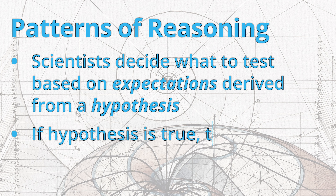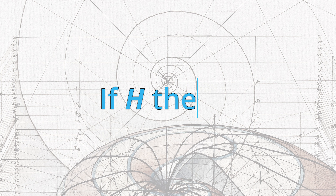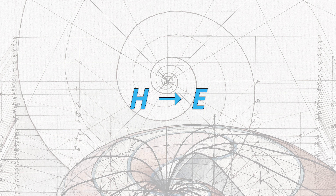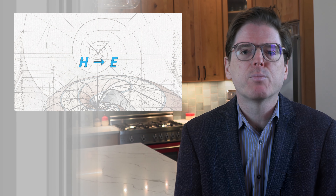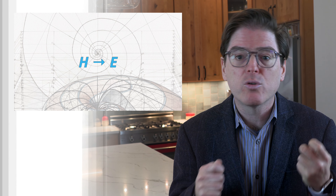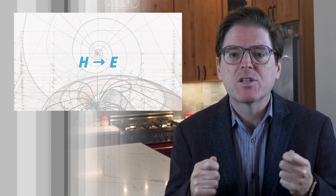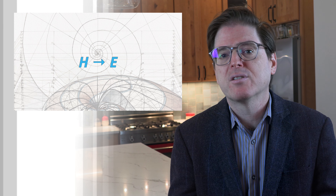If the hypothesis is true, then the experiment should have this outcome. We'll write that as: if H, then E. E is for evidence, and we'll use the arrow to represent the logical if-then relationship. If the scientist reasons correctly about the expectations that follow from the hypothesis, and if the experiment or study is set up correctly, then the data the scientist collects can tell them a lot about the truth of their hypothesis.